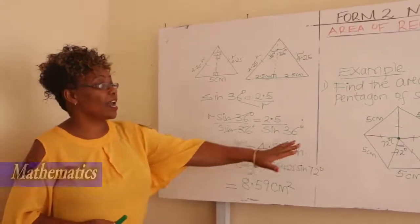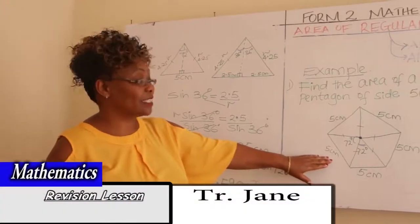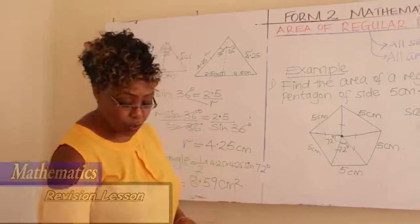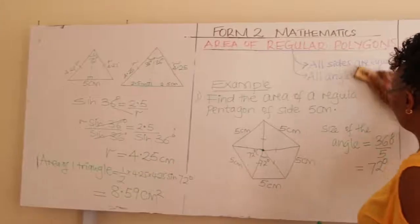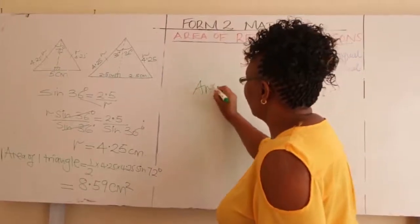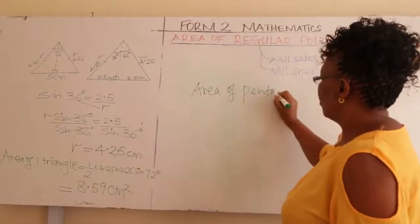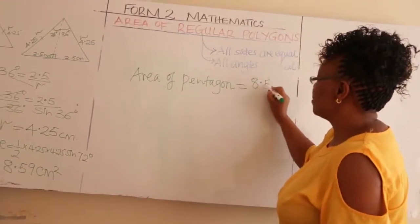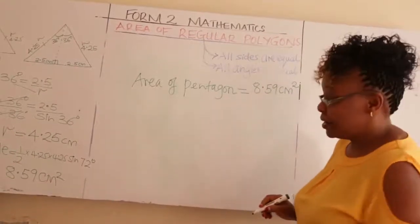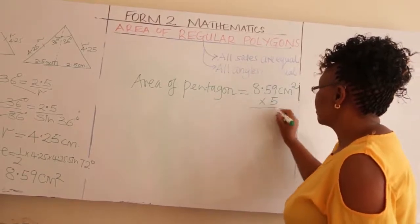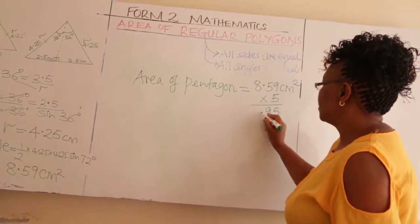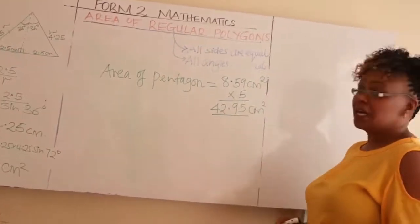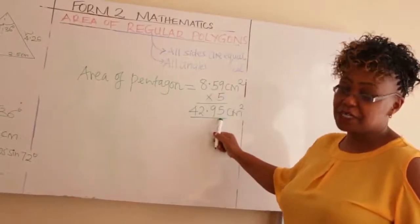Therefore, what is the area of our pentagon? Our pentagon is made up of five equal triangles. So the area of the pentagon equals the area of one triangle, which is 8.59 centimeters squared, times five triangles. Working that out, the area of our pentagon is 42.95 centimeters squared.